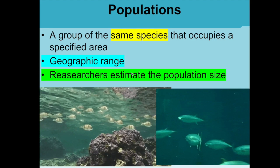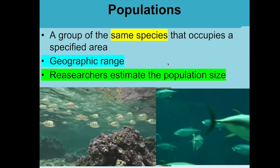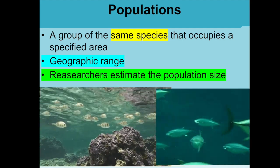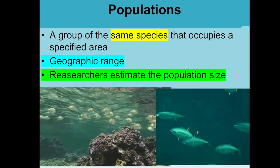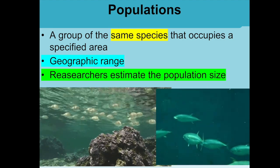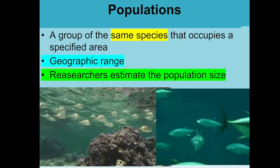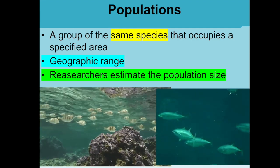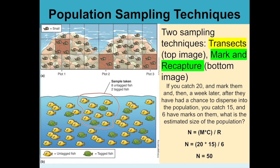Species live in different populations — a group of the same species occupying the same area at the same time. These tuna in the GIF represent one population; there are multiple populations of tuna throughout the ocean. Researchers estimate population sizes in a few ways, including transects, where you measure out a specific space, count how many organisms are in it, repeat that several times, and multiply out to reasonably estimate total population size.